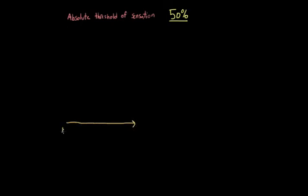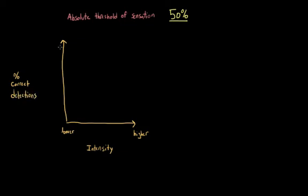So on the x-axis, we'll put intensity and we'll have lower intensity on one side and higher intensity on the other. And so for things like sound, a lower intensity would be a very quiet sound, whereas a higher intensity sound would be a much louder one. And then on the y-axis, I'm going to put percentage of correct detections. And what that's referring to is actually something you may have experienced yourself when you were in elementary school.